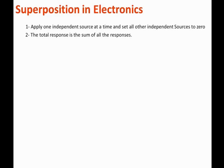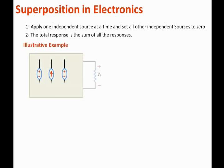Let's illustrate this concept. We have a big circuit represented by a box, and within the circuit we have three independent sources. We are interested in the voltage across the load resistor.